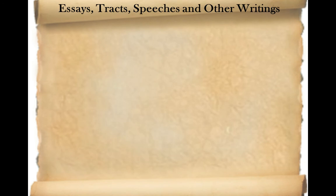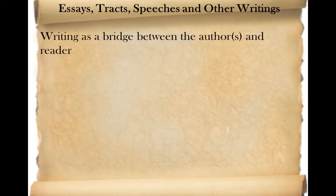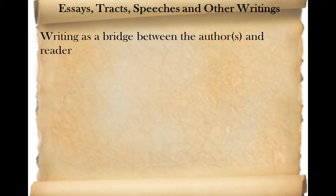As we look at essays, tracts, speeches, and other writings in American literature, what we're really trying to understand is that the writing should be understood as a bridge between the author and the reader. As an extension of first-person narratives, you do have a potential attempt to convince and get the reader to believe what you are saying about your own experience. But as we move into these non-fiction writings, what we're dealing with is the writing is an attempt by the author to get the reader to understand, believe, or be exposed to something. And it's no longer grounded in the author's own experience, but it's often grounded in arguments, in reason, in some kind of attempt to provide information and lead the reader down a particular path.